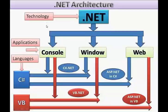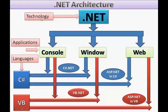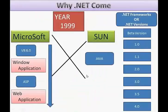Understand the difference between technology, applications, and language. Languages means C, C++, C#, VB. Applications mean console, window, web, mobile. Technologies mean .NET, Java, Oracle. Don't confuse between these three.